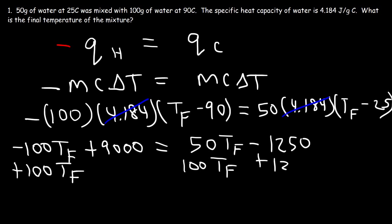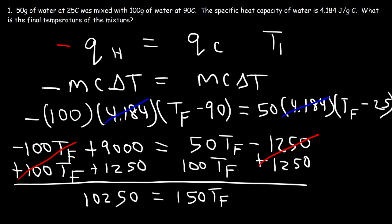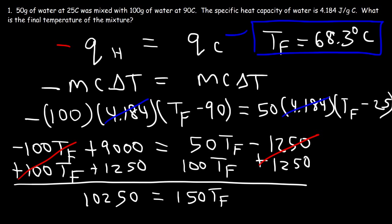Now add 100 tf to both sides, and simultaneously add 1,250 to both sides. 9,000 plus 1,250 is 10,250, and 50 plus 100 is 150. So to calculate the final temperature, it's 10,250 divided by 150. The final temperature is 68.3 degrees Celsius. And as predicted, this is greater than 57.5 degrees Celsius — closer to 90 than to 25.